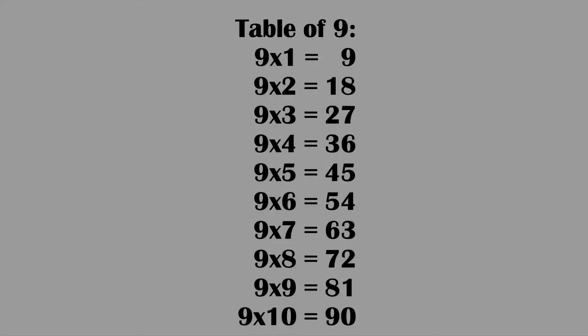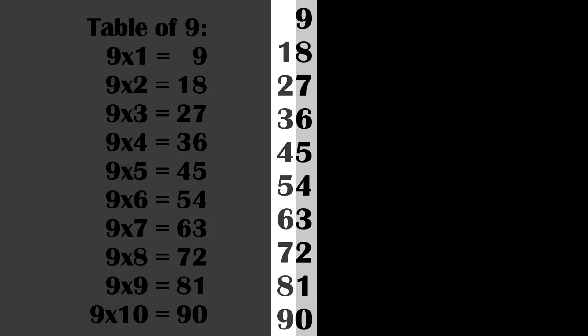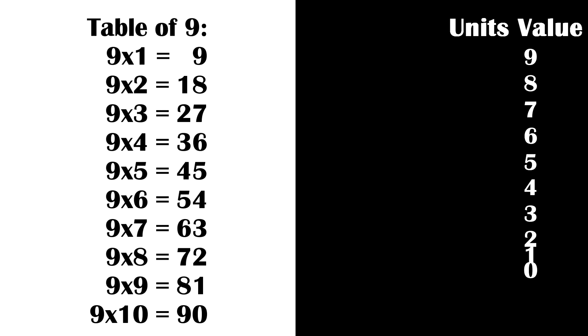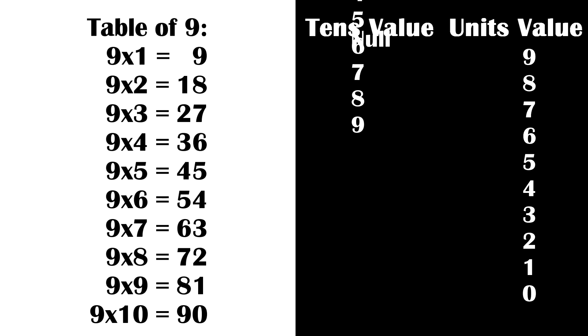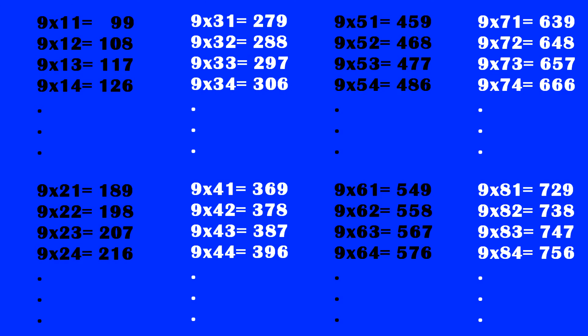Take a close look at the table of number 9. Did you observe any sequence in the product terms? You will observe the unit's place of the product terms is decreasing from 9 to 0, whereas the tens position is increasing from 0 to 9. This trend follows for all the other factors of 9 as well.